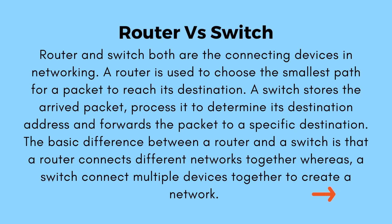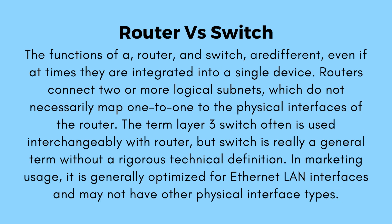A switch stores the arrived packet, processes it to determine its destination address, and forwards the packet to a specific destination. The basic difference between a router and a switch is that a router connects different networks together, whereas a switch connects multiple devices together to create a network. The functions of a router and switch are different, even if at times they are integrated into a single device.